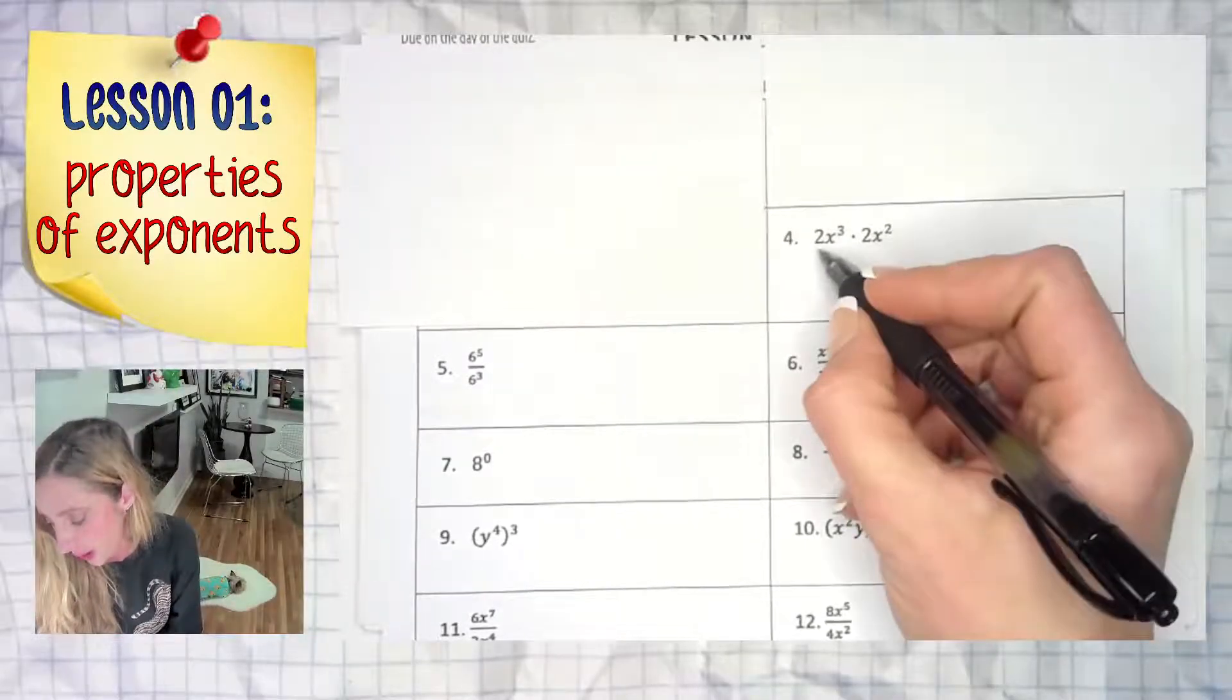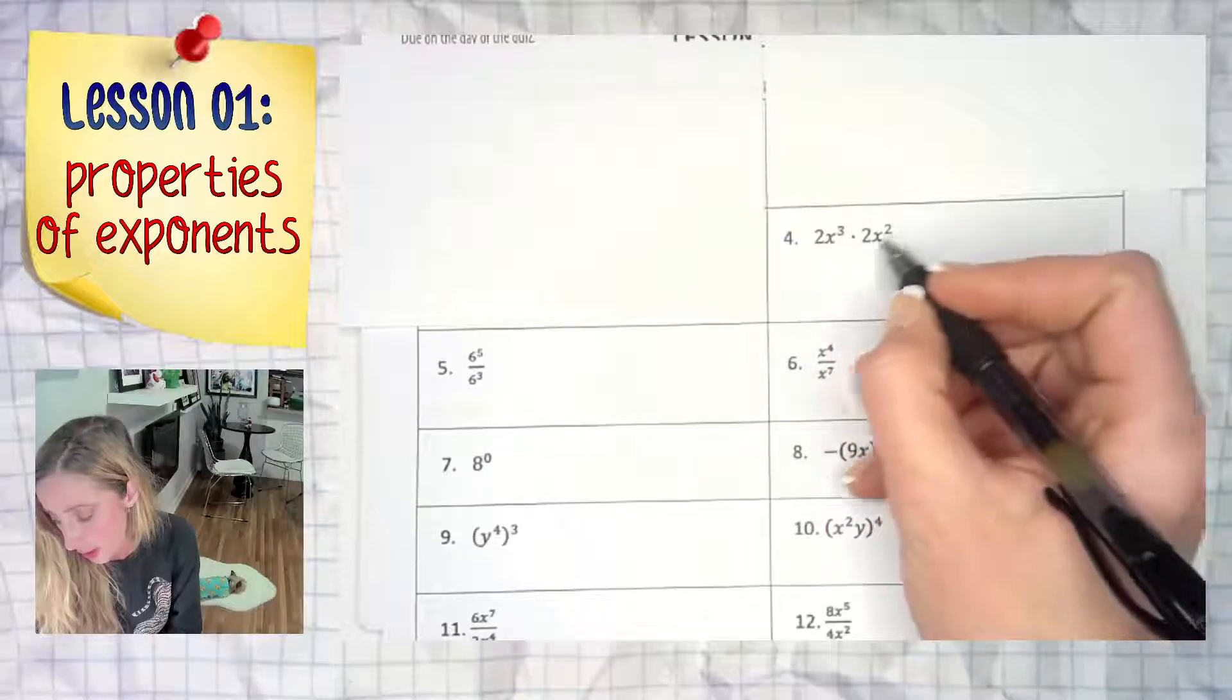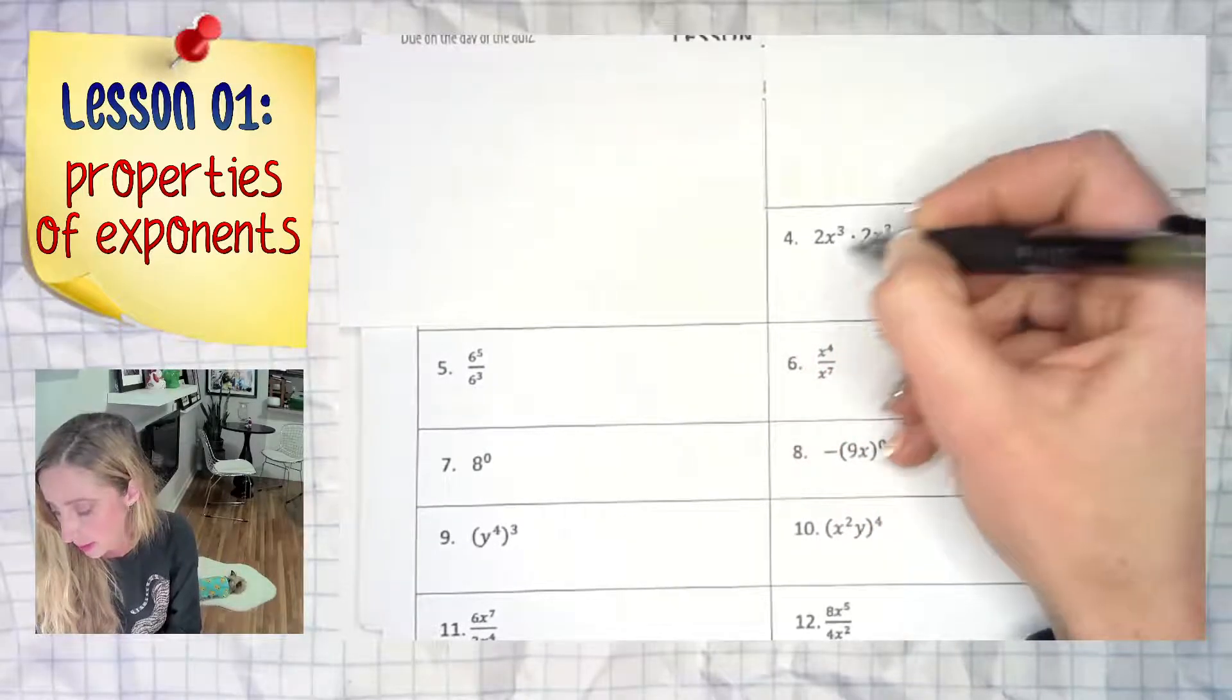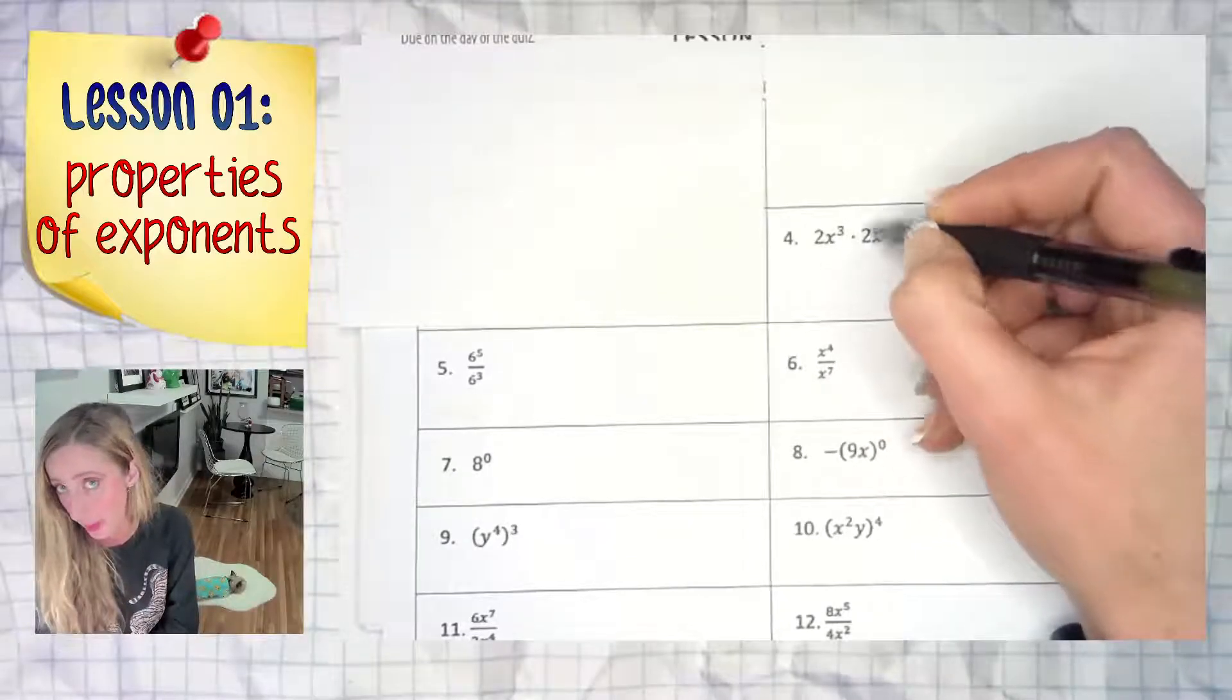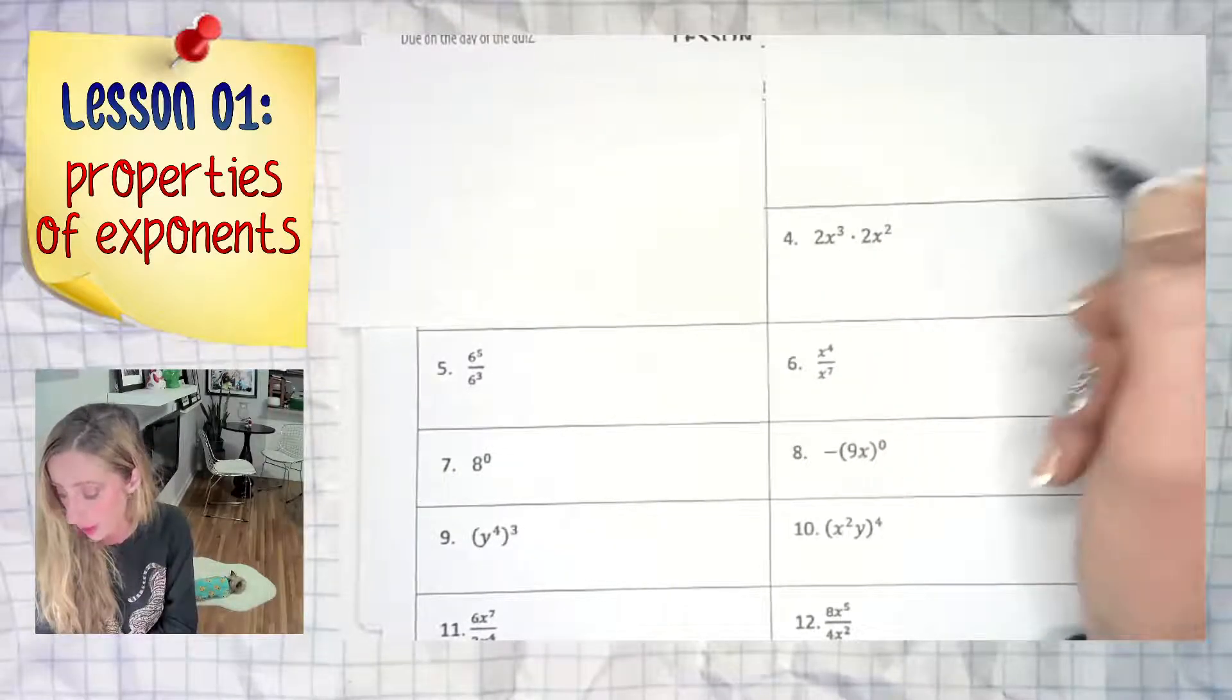In this example, we are doing 2x to the third times 2x to the second. If this was asking us to find a sum or a difference, we would not be able to combine anything because they're not like terms.